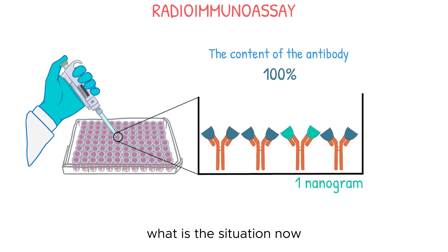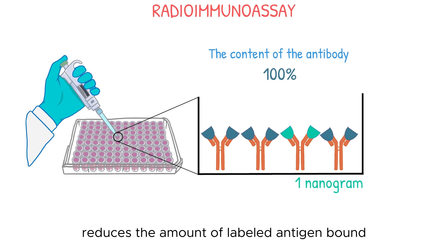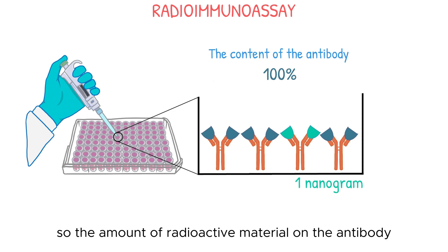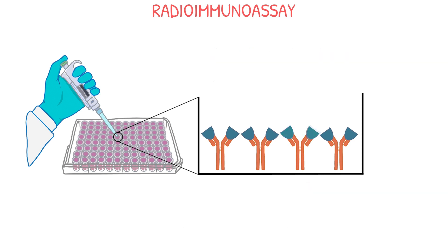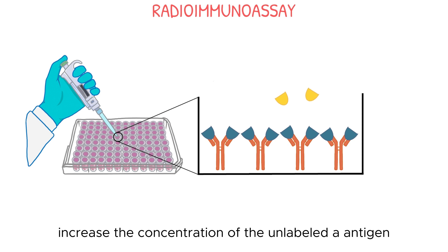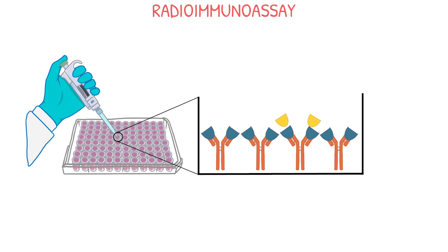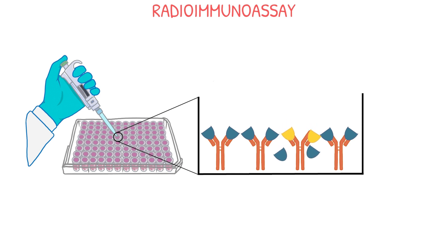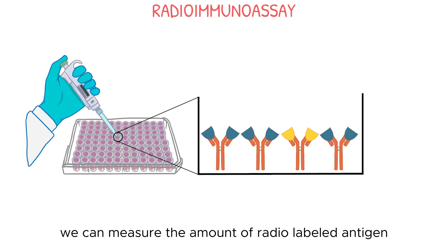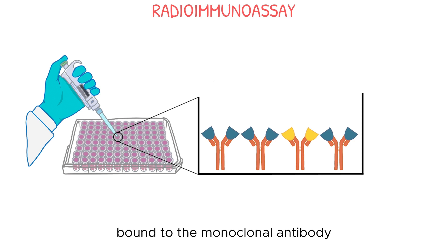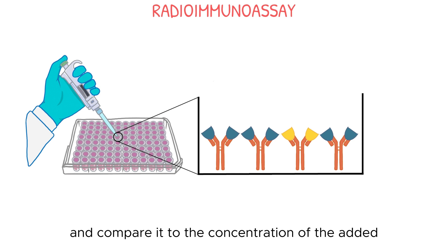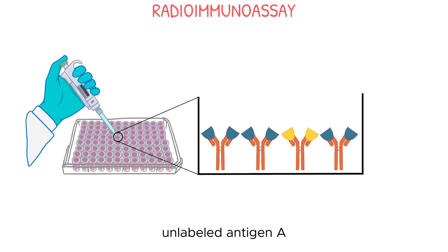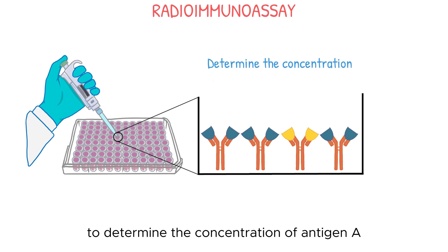The presence of unlabeled antigen reduces the amount of labeled antigen bound to the antibody, so the amount of radioactive material on the antibody is no longer 100%. Next, we can gradually increase the concentration of the unlabeled antigen A, which will compete with the radiolabeled antigen for binding to the monoclonal antibody. We can then measure the amount of radiolabeled antigen bound to the monoclonal antibody and compare it to the concentration of the added unlabeled antigen A to determine the concentration of antigen A in the sample.